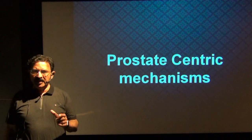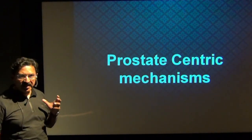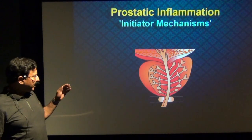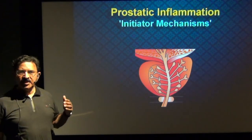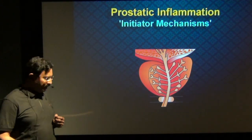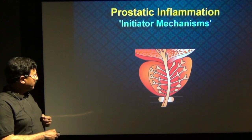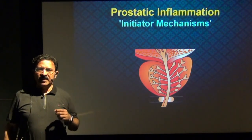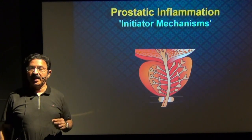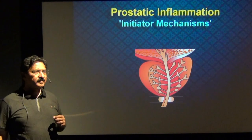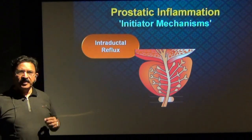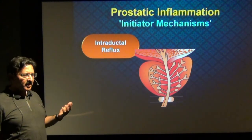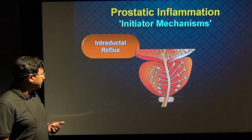Let's focus initially on what these prostate-centric mechanisms are. If you look into the structure of the prostate gland, there are very fine ducts through which the prostatic acini drain into the prostatic urethra. As you can see here, these are prostatic ducts that open into the prostatic urethra, and these are the prostatic glands — the acini. Now what initiates inflammation in the prostate gland? I call this the initiator mechanism. The first initiator mechanism is intraductal reflux of urine within the prostate gland, and there is something in the lower urinary tract which leads to this.